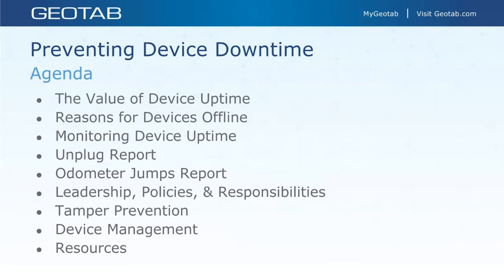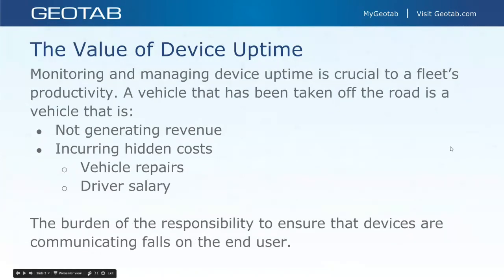Let's talk about the value of device uptime — making sure devices are online, communicating, and that you can see their location and get all the data from your vehicles. It's crucial to productivity. If you have a vehicle off the road, that's a vehicle not generating revenue, and it's also incurring hidden costs like vehicle repairs or the driver's salary, which you're still paying even if the vehicle is out of commission. The burden of responsibility to ensure devices are communicating falls on the end user.